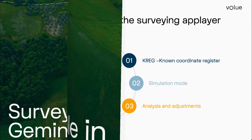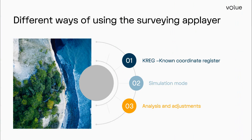The way we've chosen to implement it is by using a new type of application layer — a surveying app layer. This new type of app layer can be used in many ways, and in this video I would like to show three different ones.